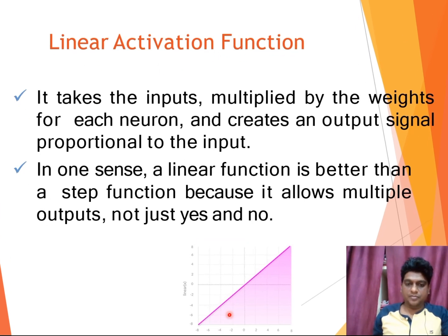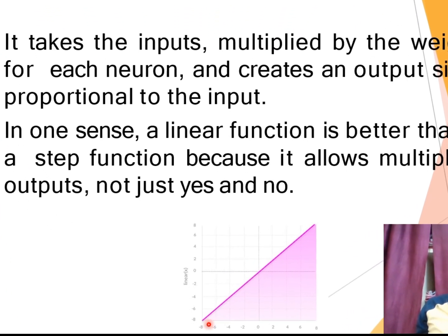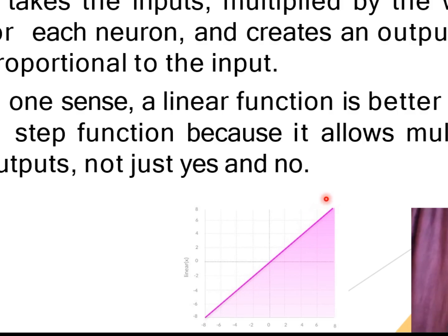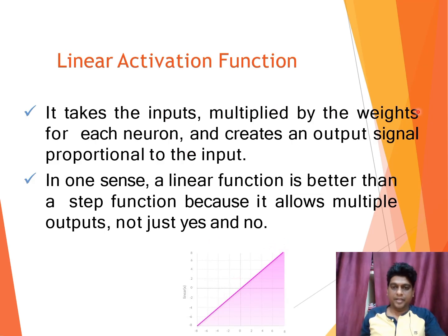The next type is linear activation function. Here, based on the input the output varies in a linear manner. Here the input are multiplied with the weights and output signal is created. That should be proportional to the input.